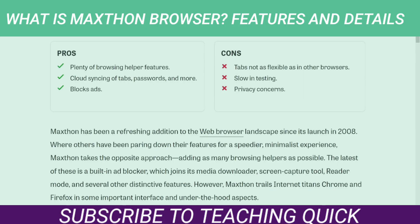Hi everyone, welcome to another new video. In this video I am going to discuss about Maxthon browser — its features, pros, and cons. Pros: plenty of browsing helper features, cloud syncing of tabs, passwords, and more, built-in ad blocker. Cons: tabs not as flexible as in other browsers, slow in testing, privacy concerns.